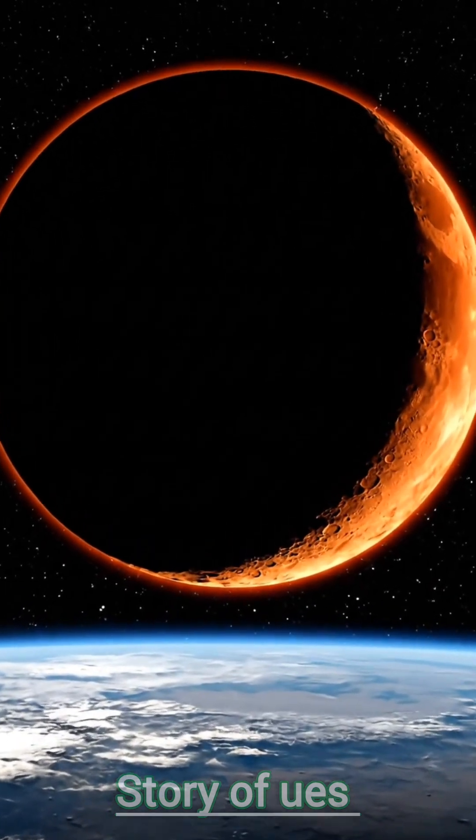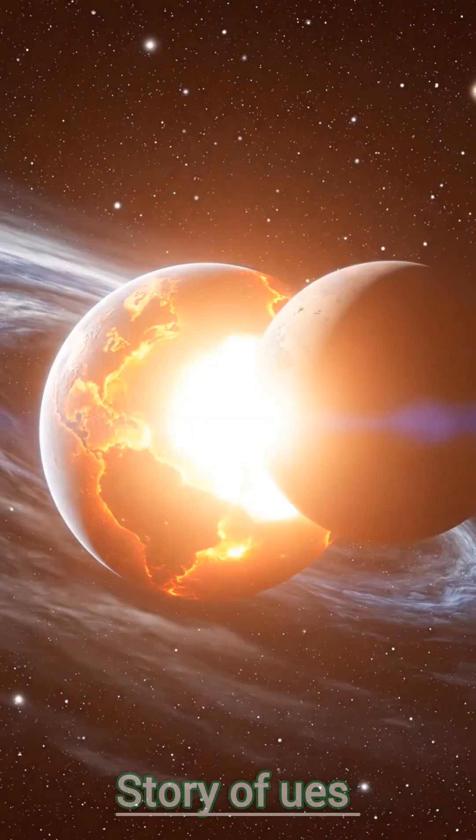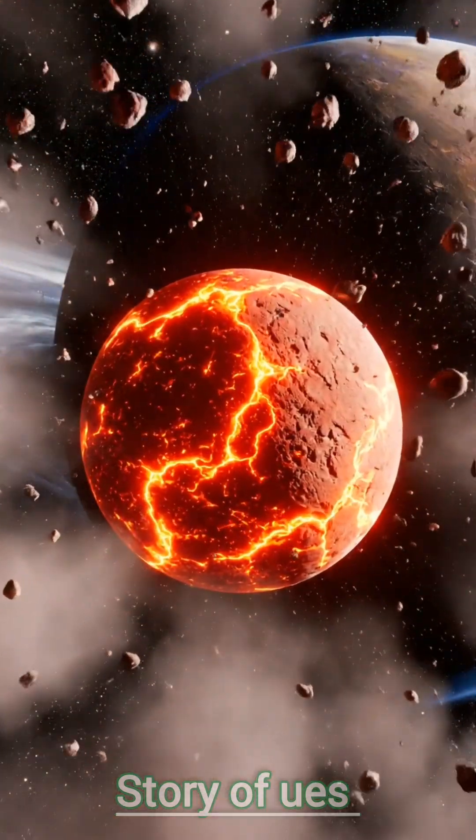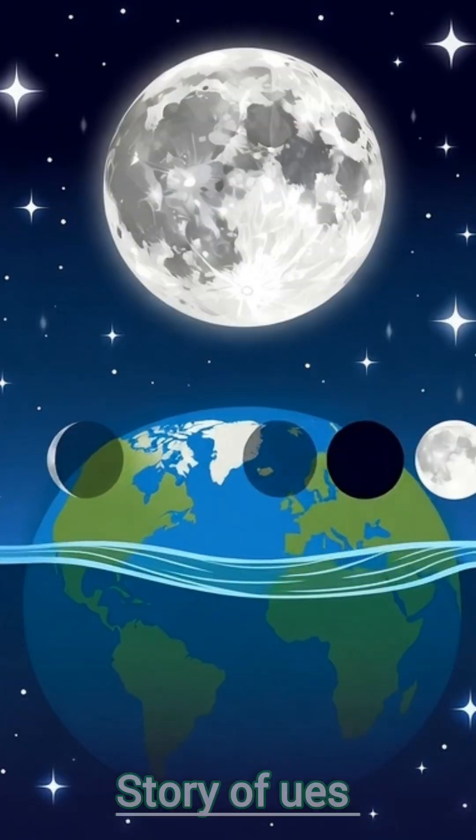Its distance from Earth is about 384,400 kilometers, making it the closest large celestial body. Sunlight reflects off the Moon, creating different phases: Full Moon, Half Moon, New Moon, and Lunar Eclipse.